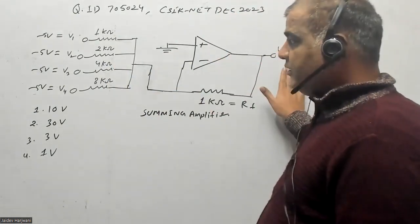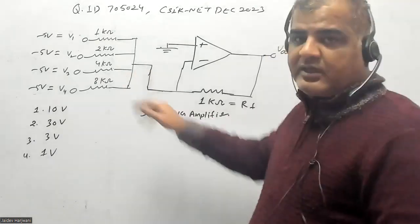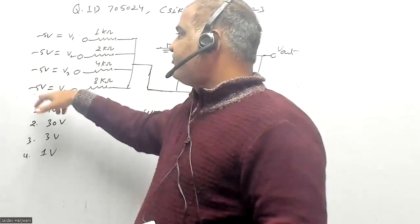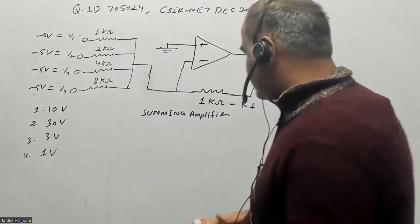In the question they are asking what is the minimum range of the voltmeter required to measure all possible outputs of this circuit. And V1, V2, V3, the maximum value is 5, so they can be either 0 or minus 5.